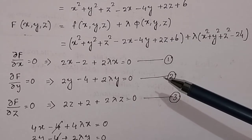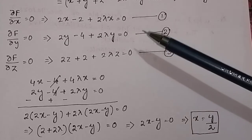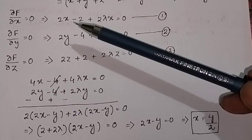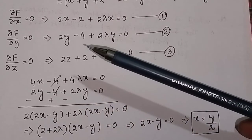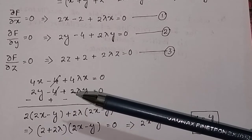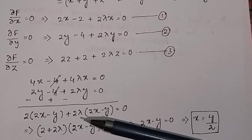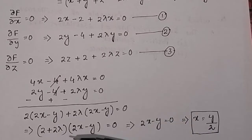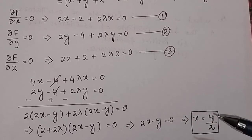To eliminate λ, multiply equation 1 by 2: 4x - 4 + 4λx = 0, then subtract equation 2. The 4's cancel and factoring out (2 + 2λ) gives (2 + 2λ)(2x - y) = 0. Setting 2x - y = 0 gives the relation x = y/2.